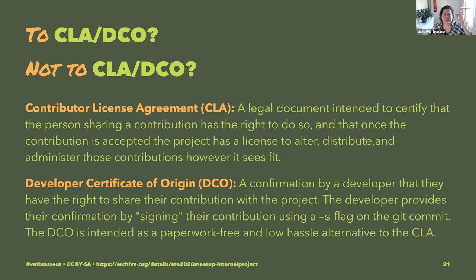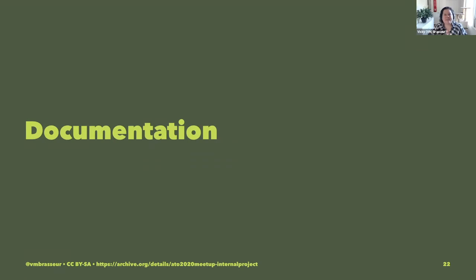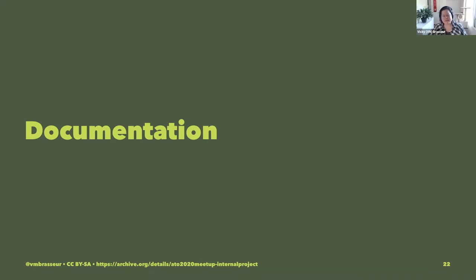Don't bring your legal team in at the very last minute. Get them in the room from the very first day you're considering releasing a project. A lot of projects are really hobbled by not having documentation. 'Oh, we can do that later'—we all know that's never going to happen. Please document your project before you release it: user docs, developer docs, installation docs, API docs, anything necessary to make your end user successful. We all love projects with good documentation and complain about those without. Launch with good docs and you're more likely to get good adoption.